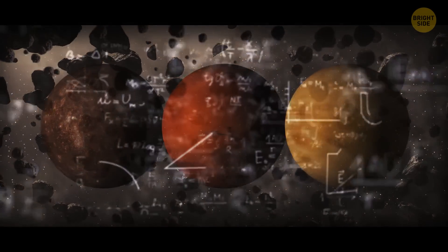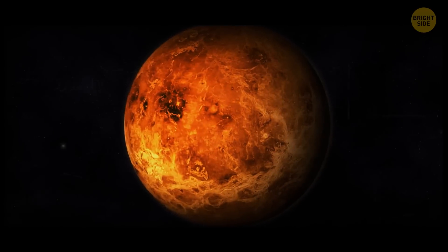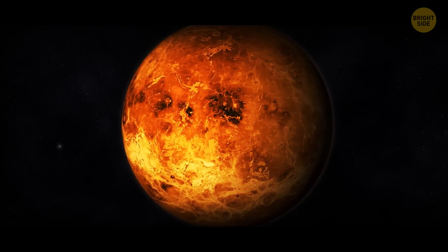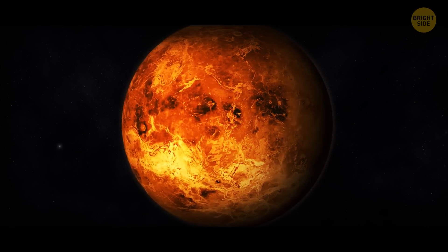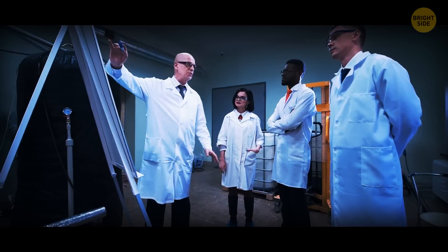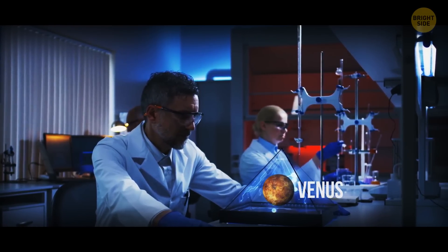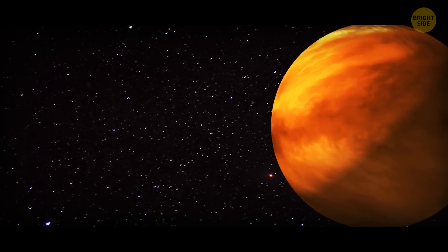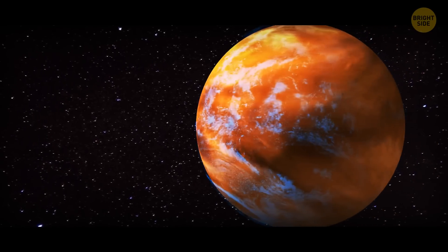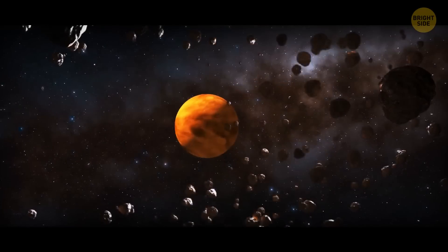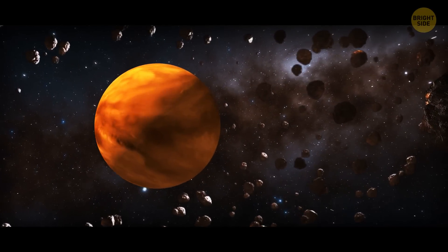The newest scientific theory claims that Venus could have had a pleasant, stable climate for billions of years before something went wrong. Astronomers did thorough research and built a model of a virtualized Venus-like world. This model demonstrated that for most of its history, the hot planet had oceans with liquid water, adequate temperatures, and stable tectonic plates.